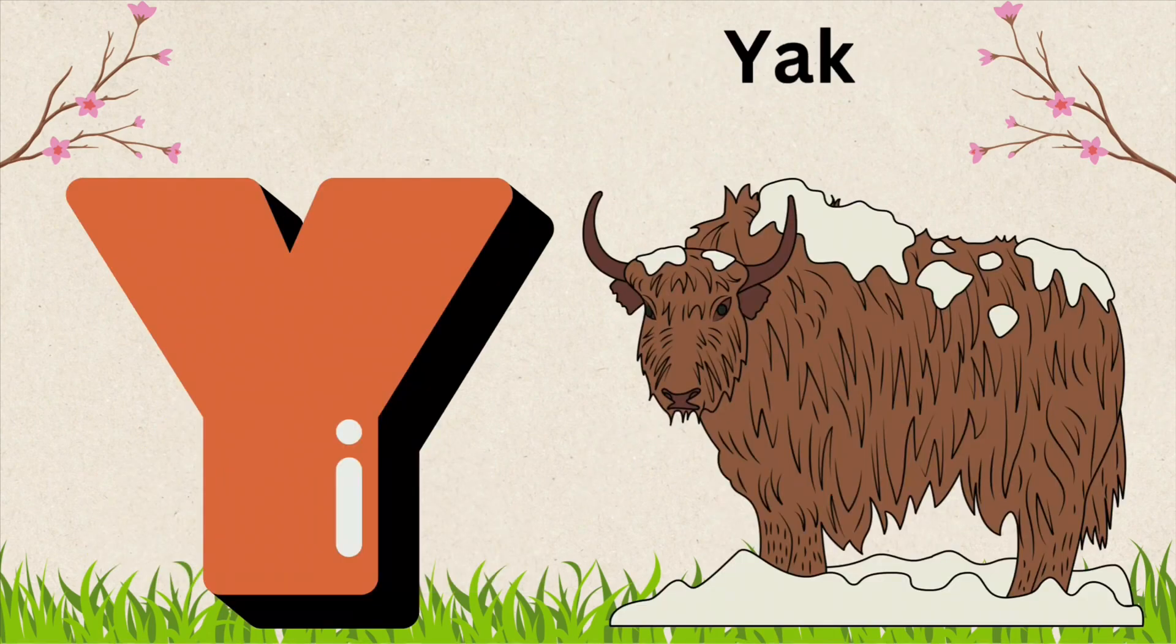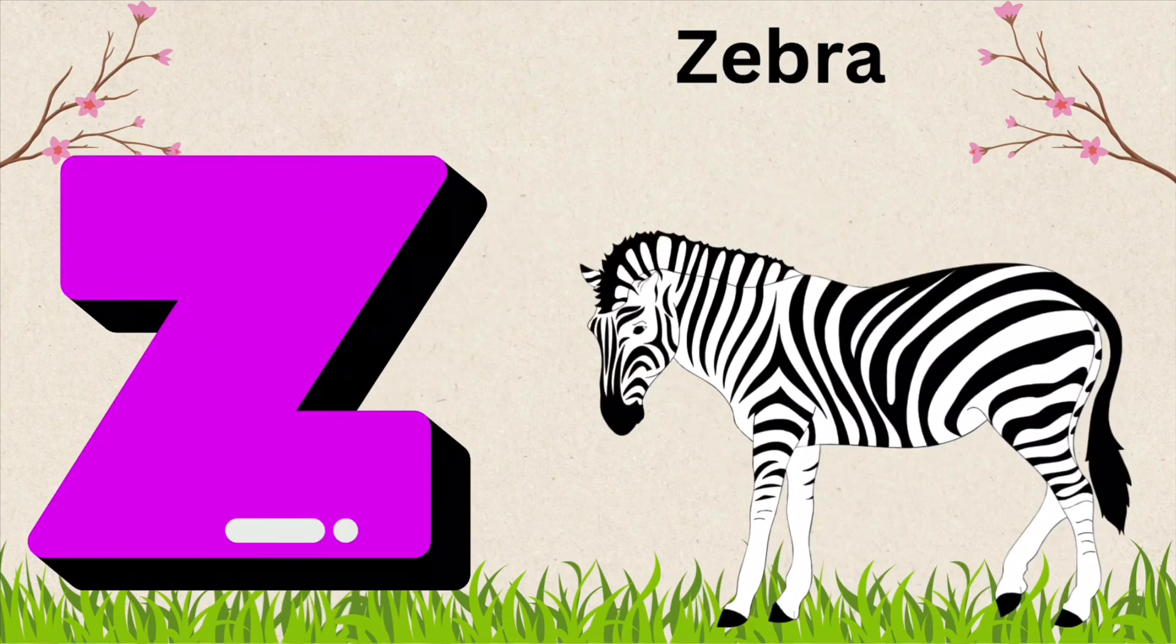Y is for Yak. Y, A, K, Yak. Z is for Zebra. Z, E, B, R, A, Zebra.